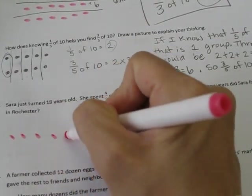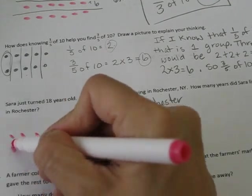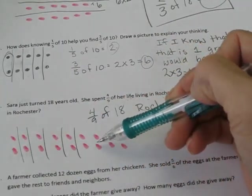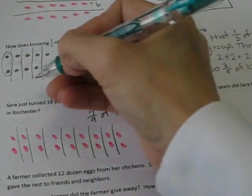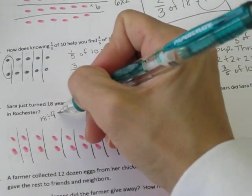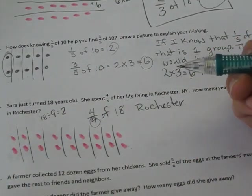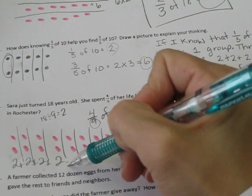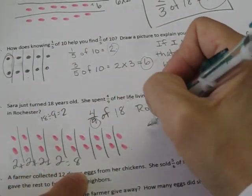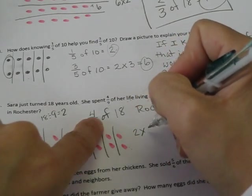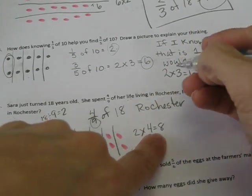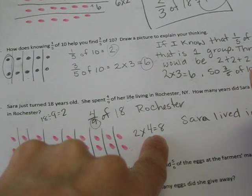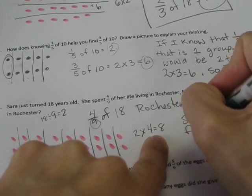I need a total of 18, so I'll draw out 18 dots and break them up into 9 groups. I can do 18 divided by 9, which gives me 2, so there should be 2 in each group. I need 4 groups, so if I have 2 plus 2 plus 2 plus 2, that gives me 2, 4, 6, 8. Or I could do 2 times 4, which gives me 8. So Sarah lived in Rochester for 8 years.